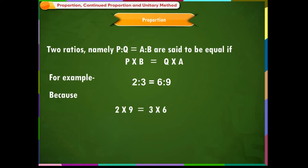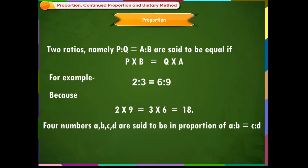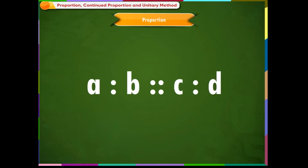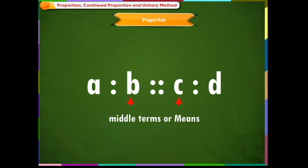Four numbers a, b, c, d are said to be in proportion if a:b is equal to c:d. We write this as a:b :: c:d, where the double colon shows they are proportional. Here a, b, c, d are called the first, second, third, and fourth terms respectively. The first and fourth terms are called the extreme terms or extremes, and the second and third terms are called the middle terms or means.